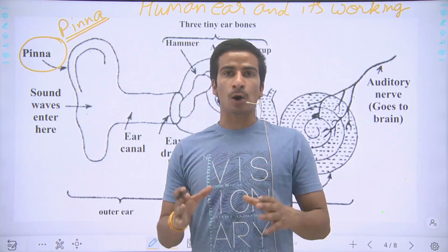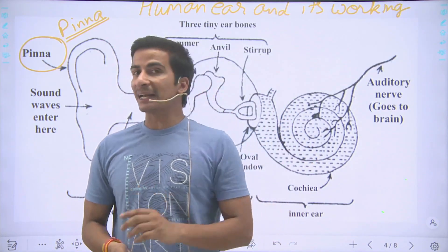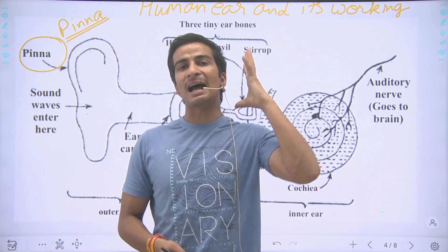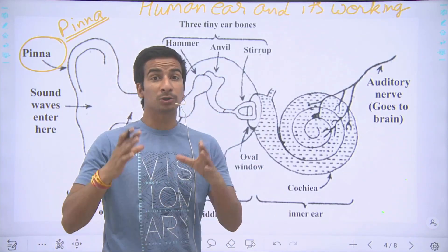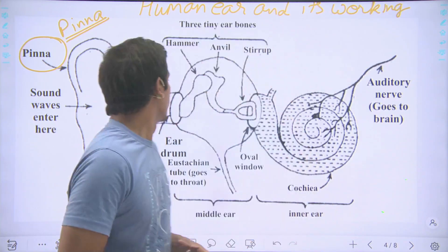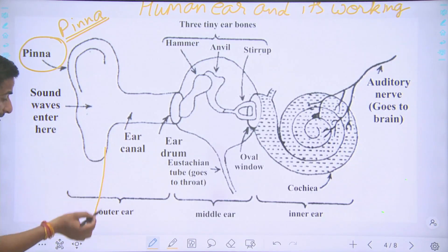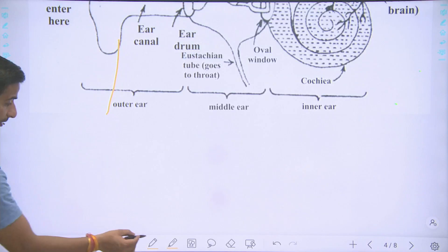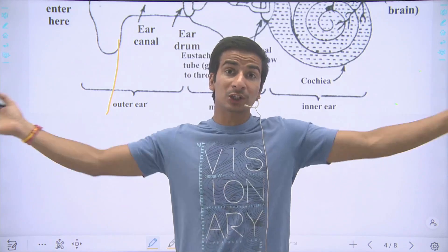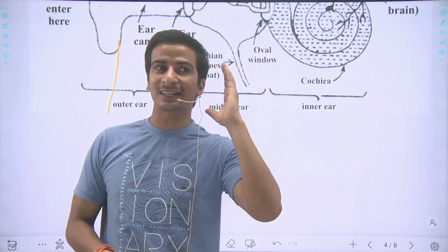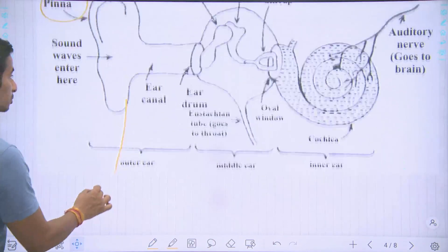So pinna basically controls the amount of sound waves. The larger the pinna, the more sound waves interact with it. Now moving on to the next part.